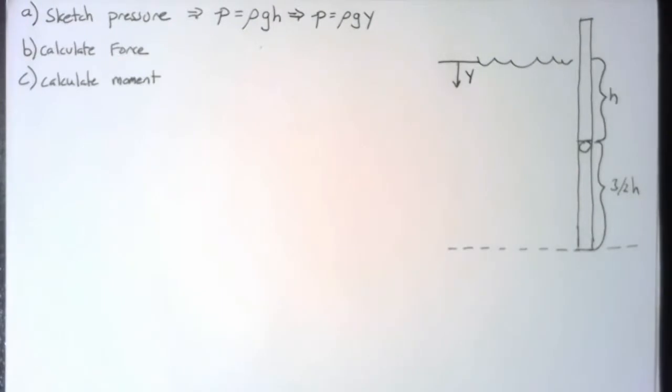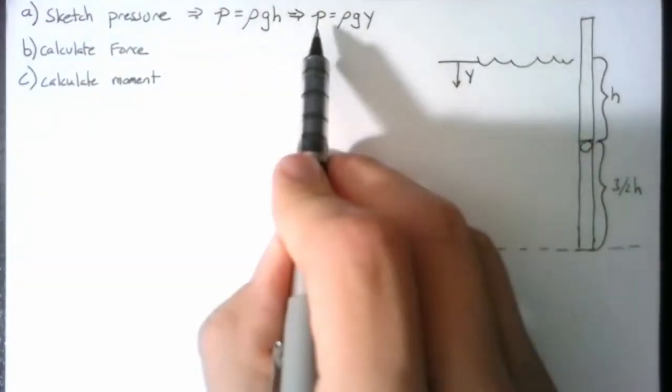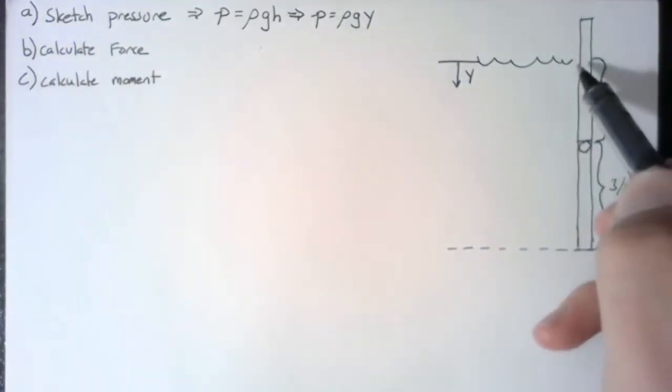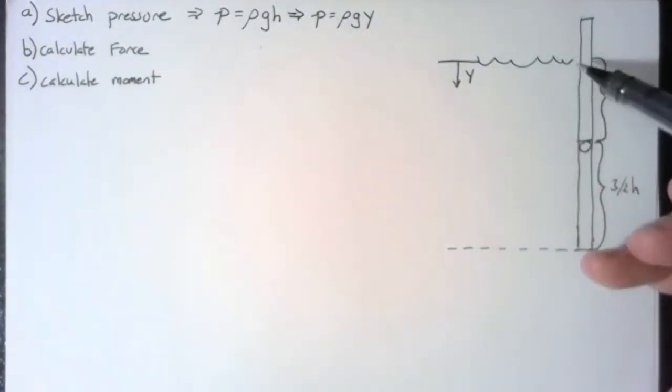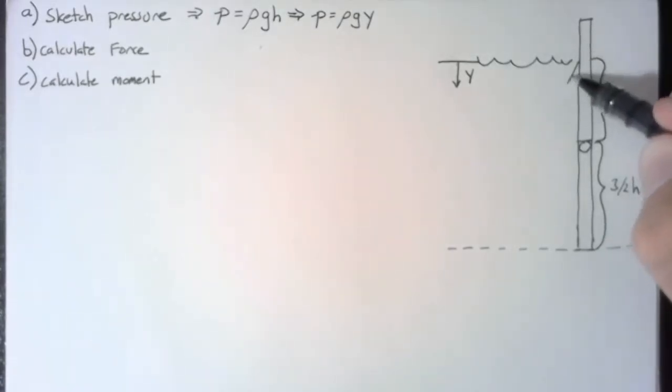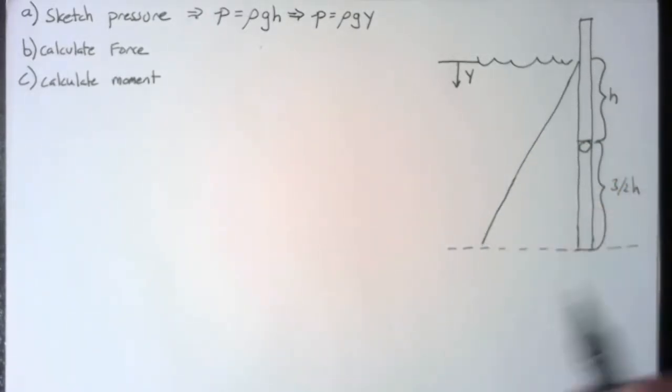This is completely arbitrary. I can choose whatever I want, but it makes this equation easy. So that pressure is 0 at atmosphere and increases as we go downward. So now I can sketch this quite simply, because we all know what a line looks like.